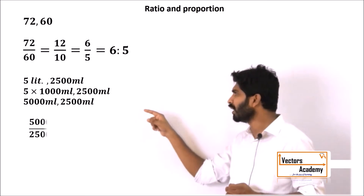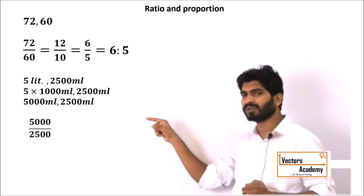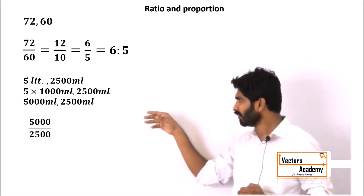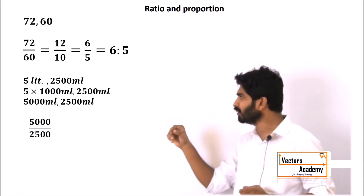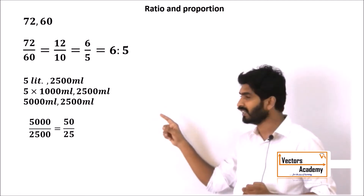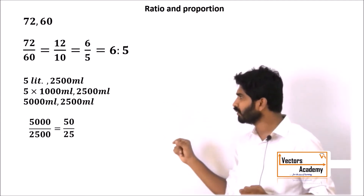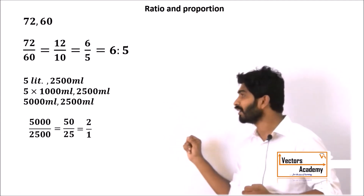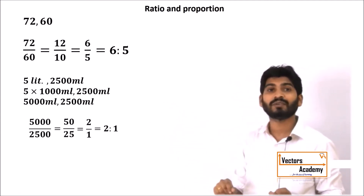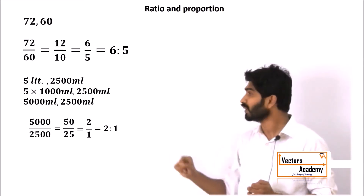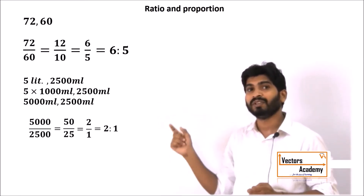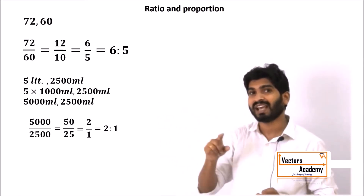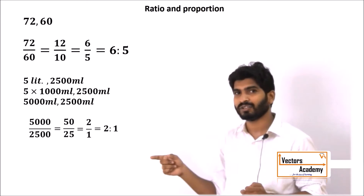Now we can take the ratio: 5000 upon 2500. Canceling the zeros, 25 into 2 is 50, so we can reduce it to 2 is to 1. This is how you take the ratio when units are not the same — convert to the same units first and then take the ratio.